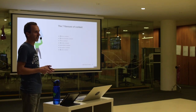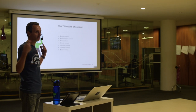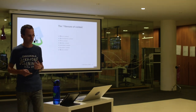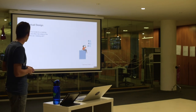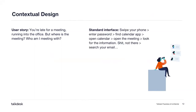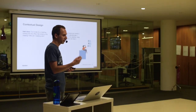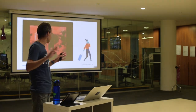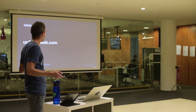Every aspect of the interaction has a lot of things going on around the person using it. We need to take all those details into consideration to have a great user experience. Imagine a simple use case: you're late for a meeting, running into the office, you don't know which room it's in, who you're meeting with. The basic approach would be unlocking your phone, finding the calendar app, opening it, looking for information — it's not there, then going to mail to find out who you're talking to. All hell breaks loose.